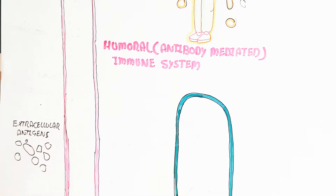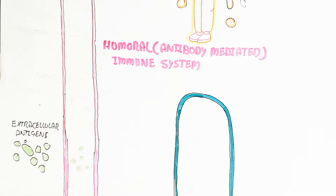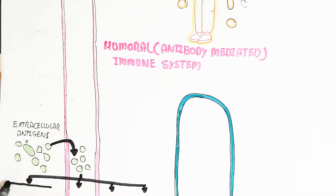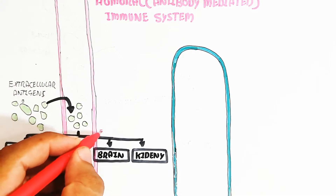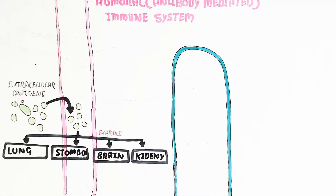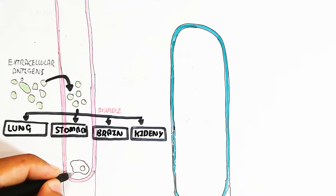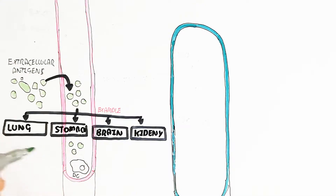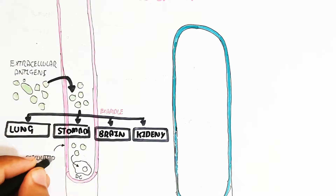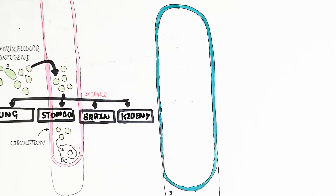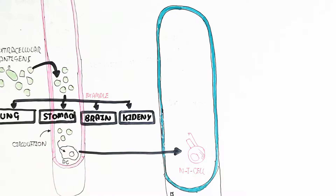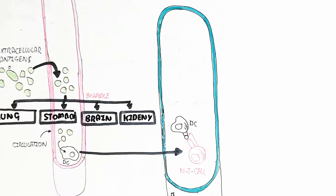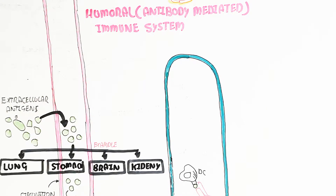Here is the blood circulatory system, and the green color shows the lymphatic system containing lymph nodes and the thymus gland. Extracellular antigens enter the blood circulatory system, activating the immune system. The antigen can target the lungs, stomach, brain, and kidneys. The dendritic cell uptakes the antigen — this is indirectly part of humoral antibody-mediated immunity.